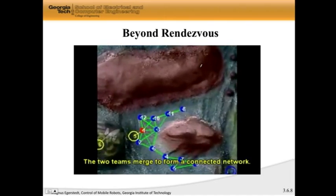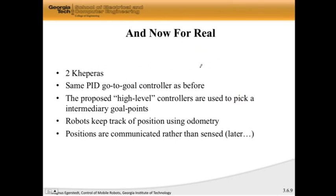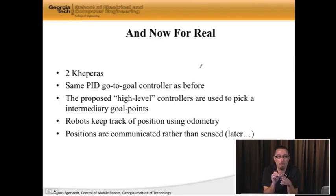Now, having said that, talk is cheap, right? And simulation is maybe not cheap, but let's do it for real. In this case, we're going to have two Khepera mobile robots. And what we're going to do is we're going to use the same PID go to goal controllers, and we're going to let the consensus equation plop down intermediary goal points. And what we're going to do is we're going to keep track of our position using odometry, meaning our wheel encoders. And what the robots are going to do is they're actually going to tell each other where they are, rather than sense where they are, because we haven't talked yet about how to design sensing links. So, what we're doing is we're faking the sensing, and they're telling each other where they are, and they're using a PID regulator to go in the direction that the consensus equation is telling them to go in. And now, let's switch to the actual robots running and solving the rendezvous problem.